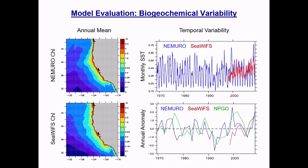We can do the same for biogeochemistry using satellite chlorophyll biomass. Comparing model-generated chlorophyll to remote sensing data, the spatial patterns look reasonable. The model does tend to exaggerate the amplitude of the seasonal cycle in chlorophyll, but when you look at the low frequency inter-annual variability, the model in blue and the observations agree reasonably well. The low frequency variability in model chlorophyll biomass appears related to the North Pacific Gyre Oscillation.